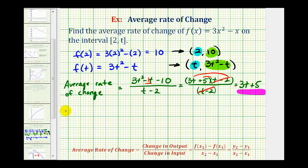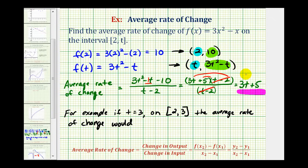For example, if t equals 3 on the closed interval from 2 to 3, the average rate of change would be 3 times the value of t, which is 3, plus 5, equals 14. So on this interval, the rate of change would be 14.